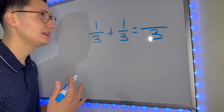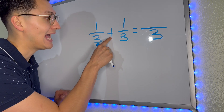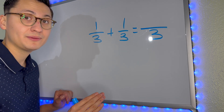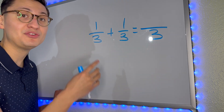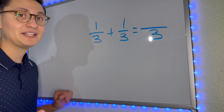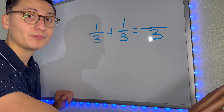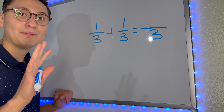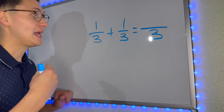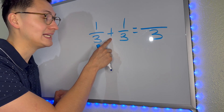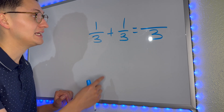The only thing that changes is the numerator, and it is going to change when we add. It's super important to look at the symbol, to look at the sign — it tells you what to do. For example, let's say you're at a stoplight. If it's green, that means go. If it's yellow, that means slow down. If it's red, that means stop. So you have to pay attention to the sign. It's going to tell you what to do, and in this case it's telling us to add.